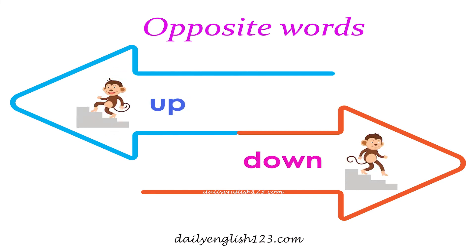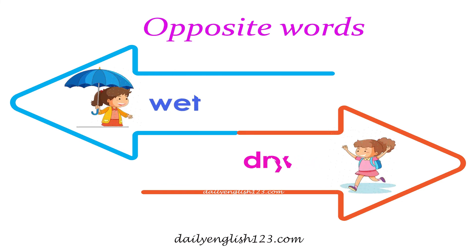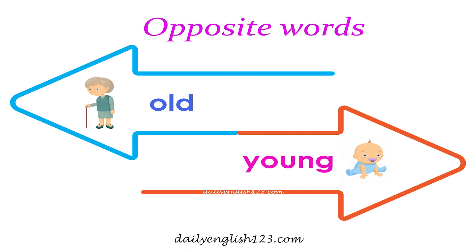Number 19: Up is the opposite of down. Number 20: Wet is the opposite of dry. Number 21: Old is the opposite of young.